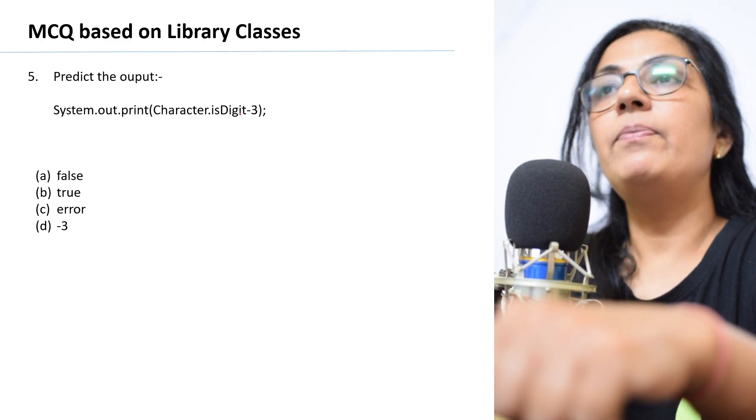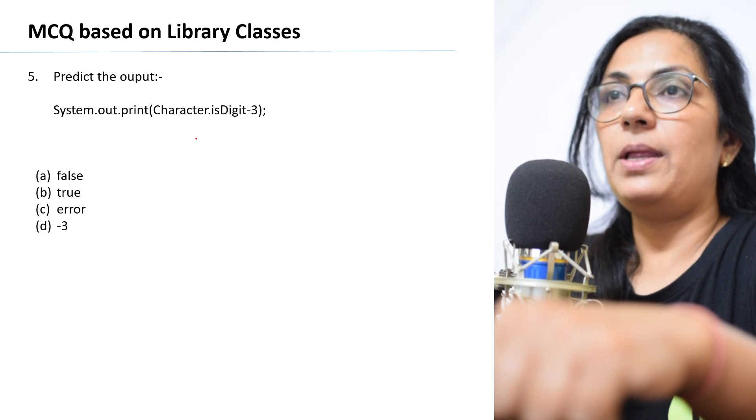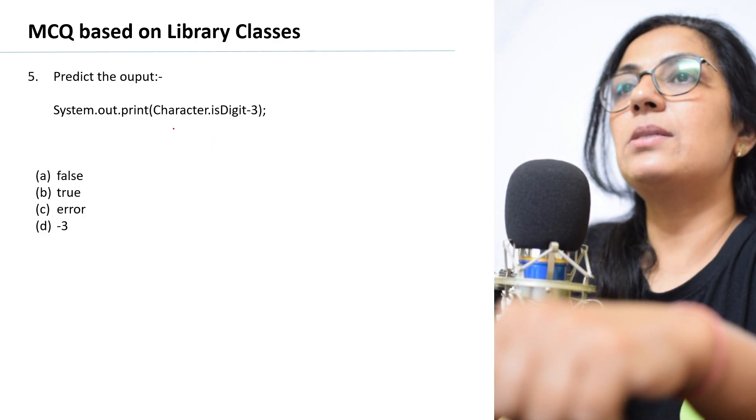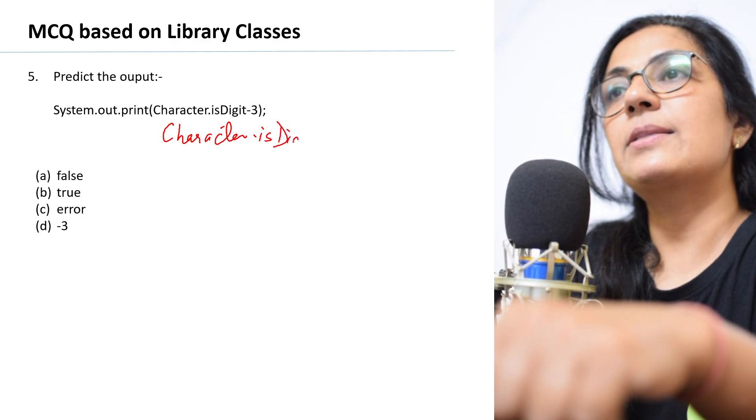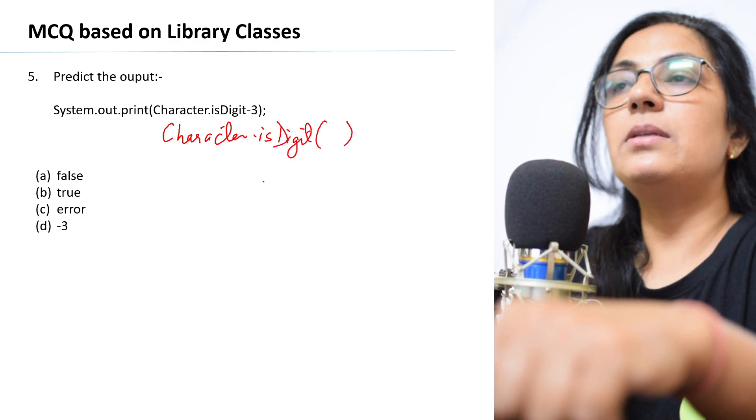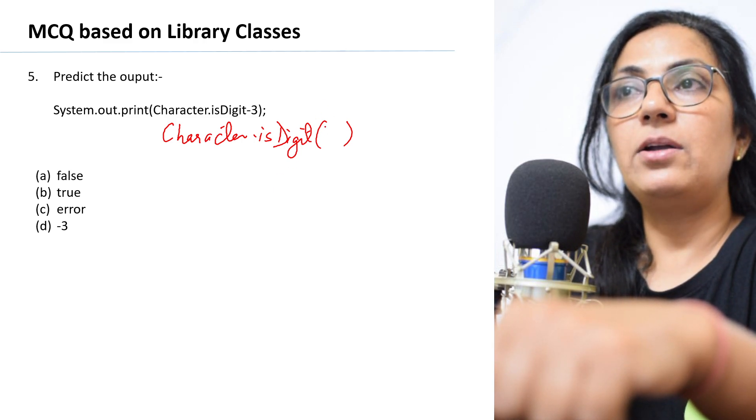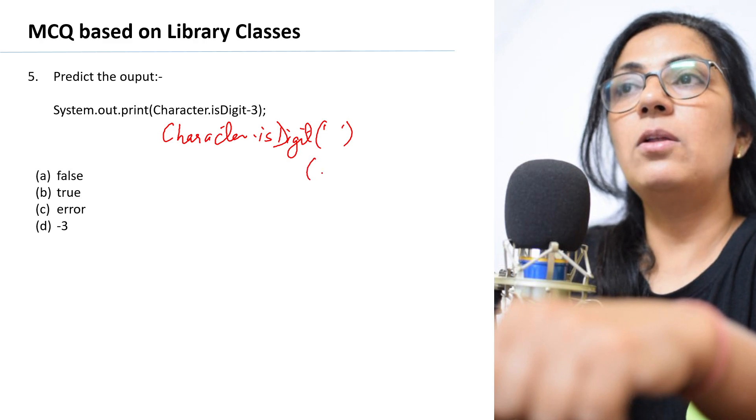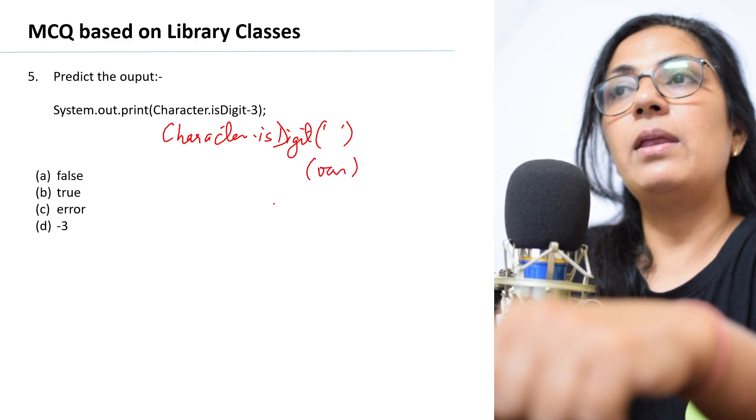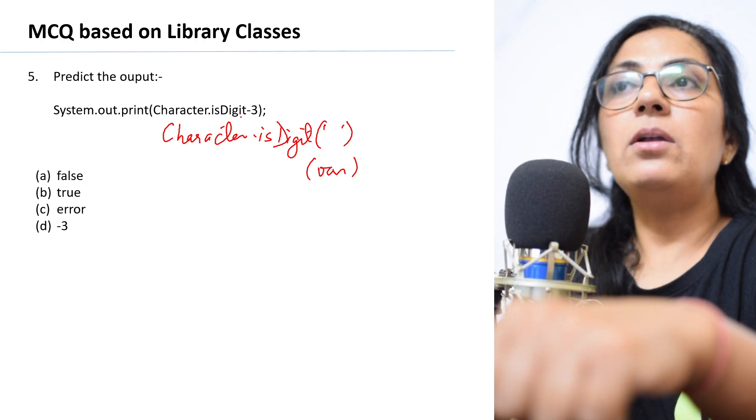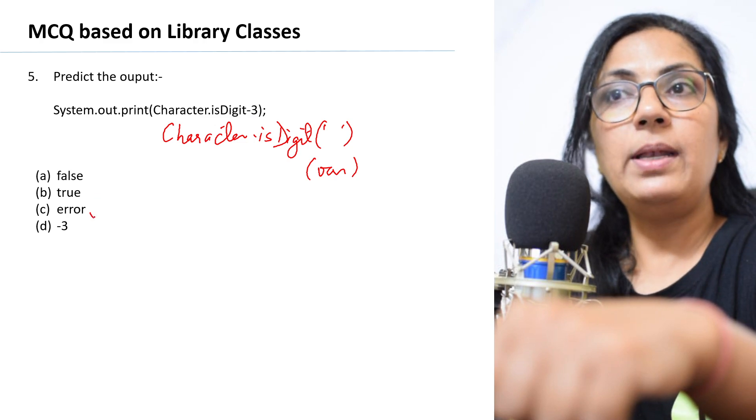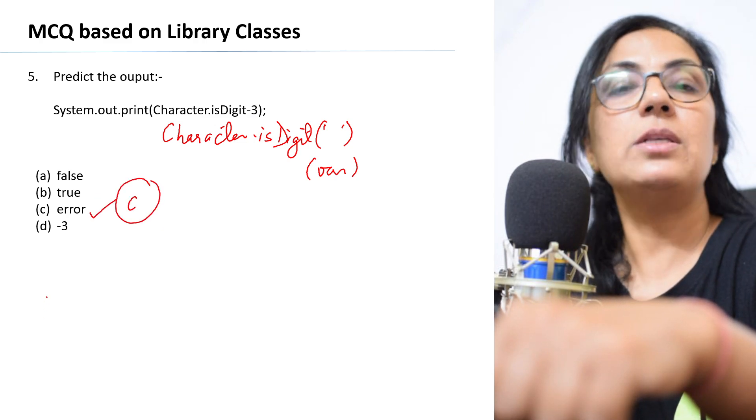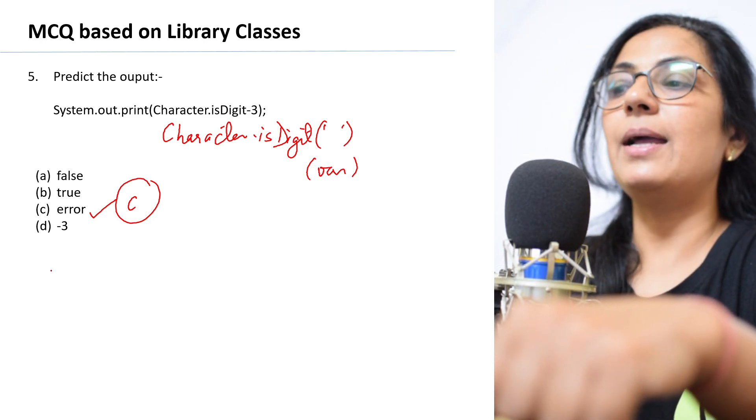We move on to question number 5. System.out.print character.isDigit minus 3. Children, when you use character.isDigit function, the parameter is written within the bracket. It should be a constant within single quote or a char variable. So character.isDigit minus 3 is not the correct syntax. You will get error when you try to execute this particular statement. Option C is the correct answer.